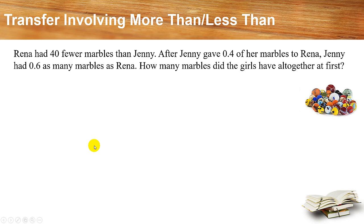We are going to revise one more example involving transfer, involving more than or less than. In this example, Rina had 40 fewer marbles than Jennie. After Jennie gave 0.4 of her marbles to Rina, Jennie had 0.6 as many marbles as Rina. How many marbles did the girls have altogether at first?